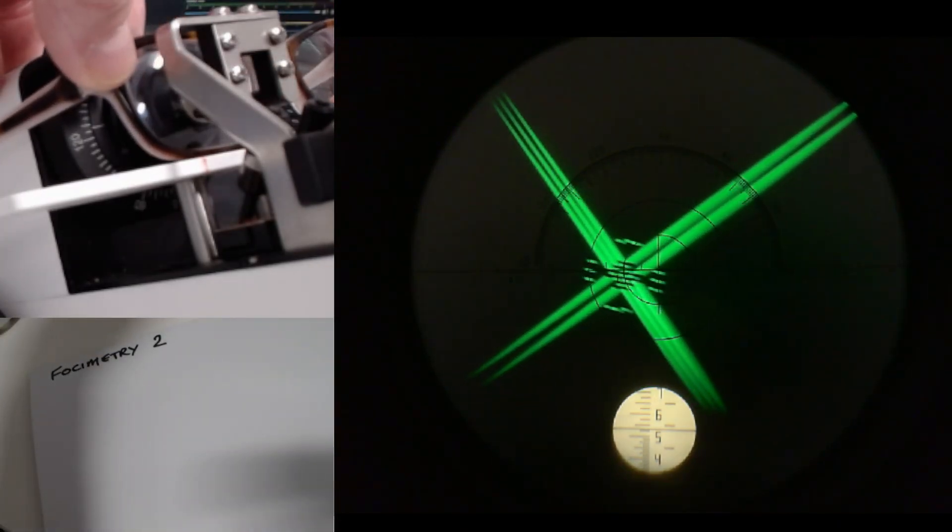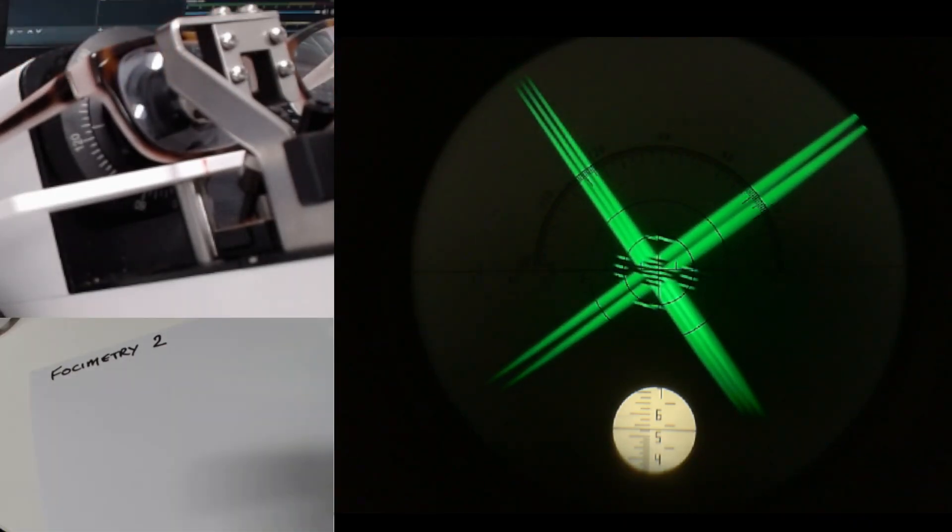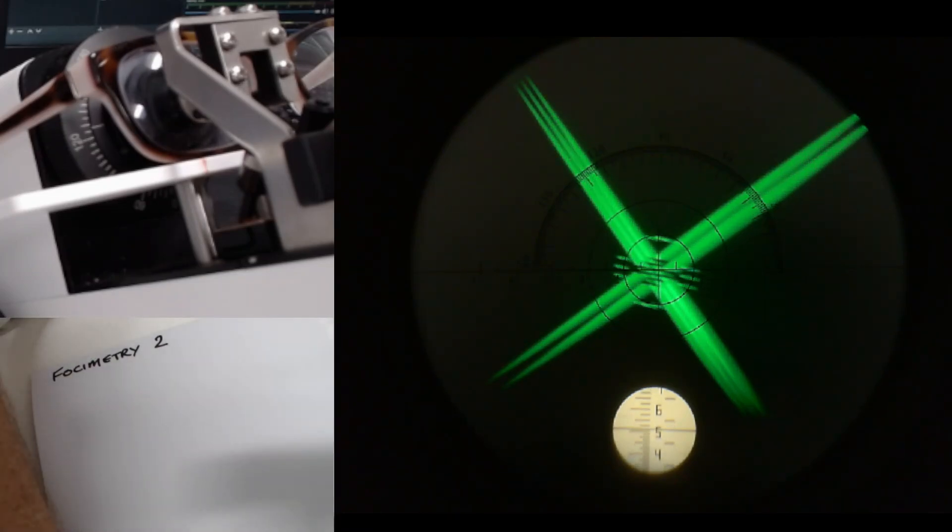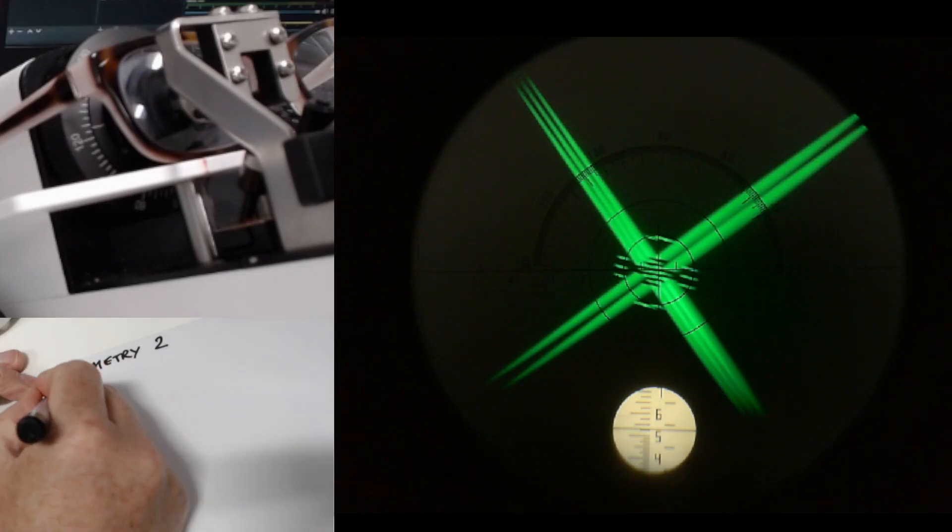You'll have a sphere, a cyl, and an axis for this prescription. If I get that in the center there, that looks pretty good. Looking at the scale, I think it's between two. Let's call that minus 5.25. So, right lens, minus 5.25.